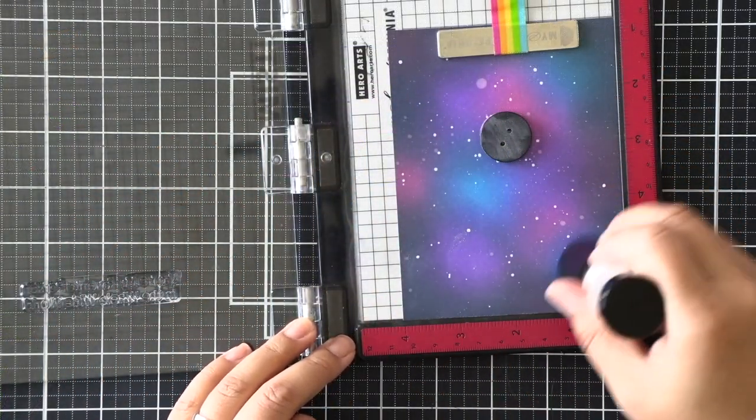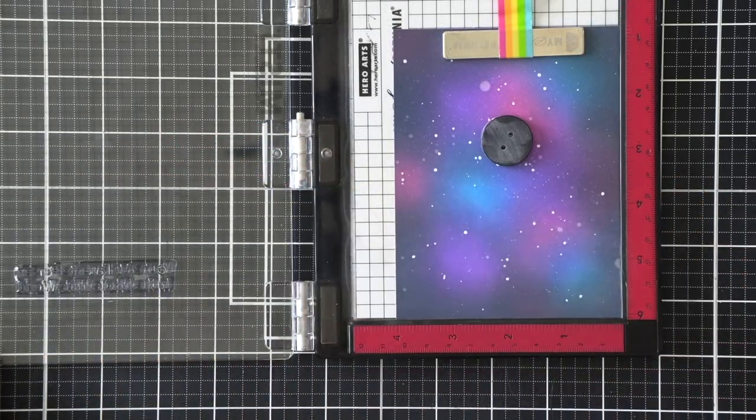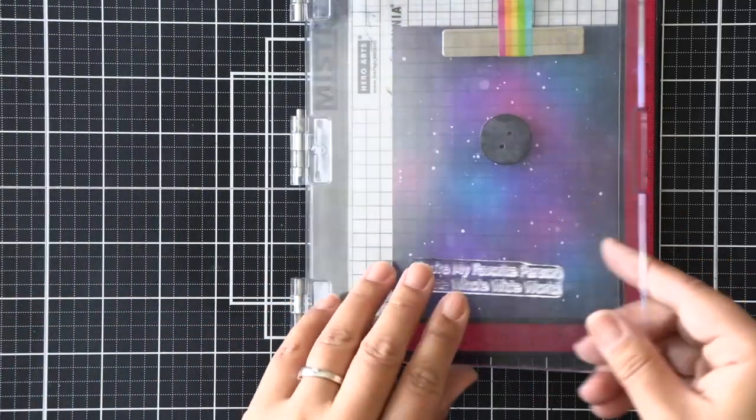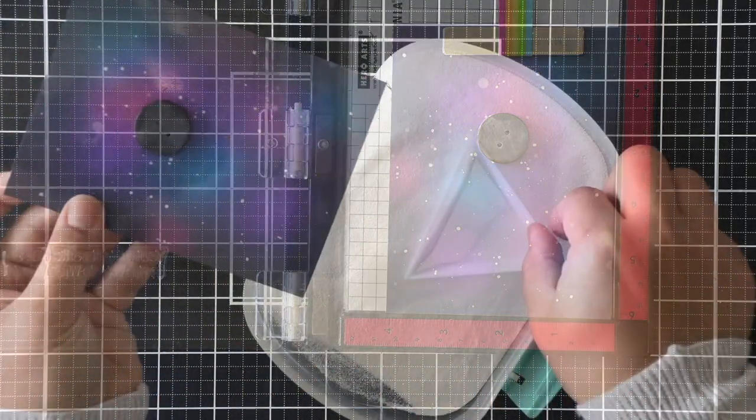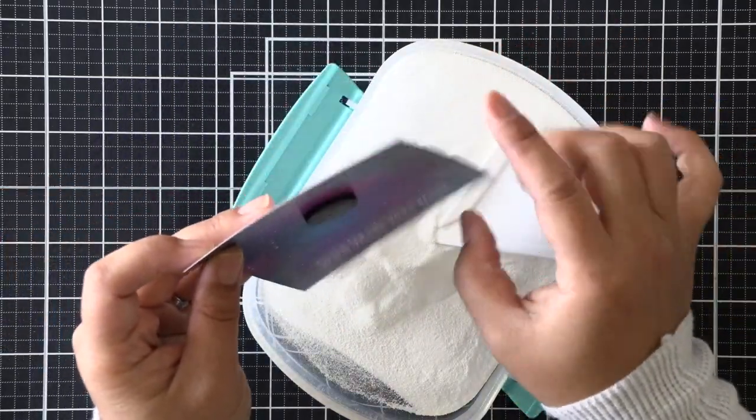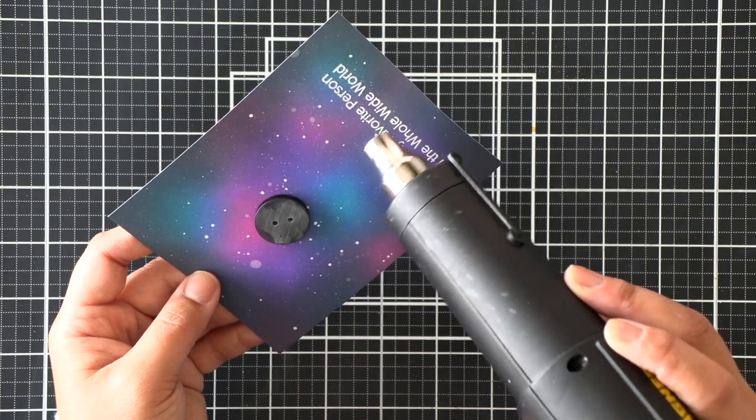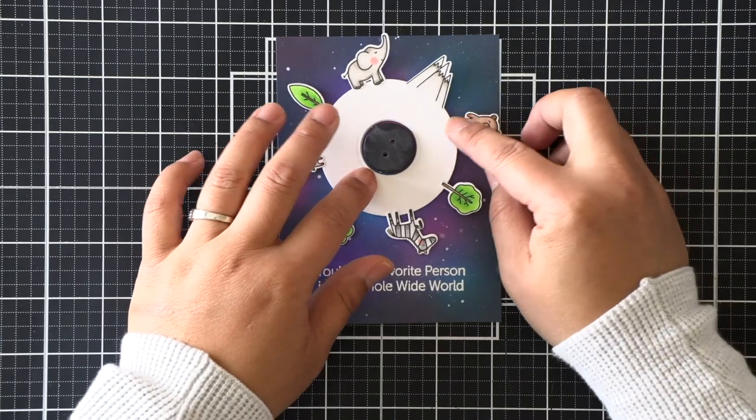At this point, I realized I should probably do the sentiment first. I didn't want to do a sentiment strip that I would adhere later because that might catch with the spinning mechanism. So I went ahead and used some embossing tool to keep the stray powders from sticking to the ink and to the glaze that I put down. That worked pretty well, and we're just going to emboss the sentiment.